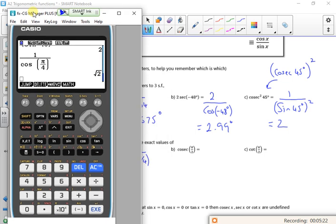I've got cosecant pi by 2. So that's 1 over sine of pi by 2. That gives me a value of 1.